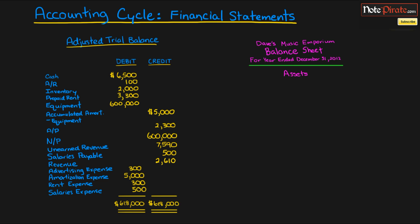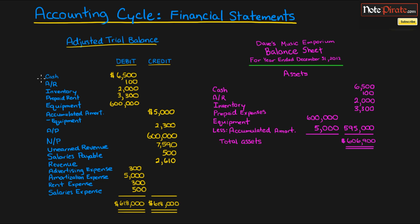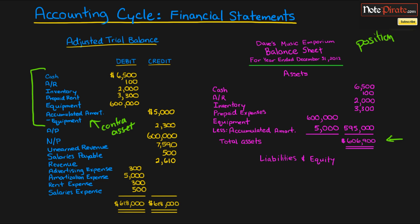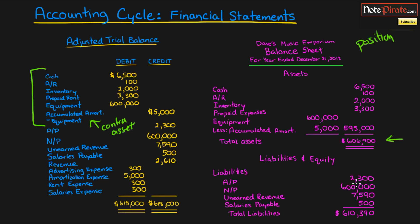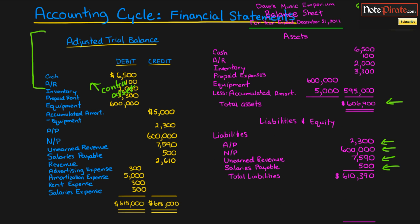We'll start with assets, the first part of the balance sheet, transferring all the different asset accounts from the left side of the adjusted trial balance — including contra assets, which still go in the asset section. Total assets come to 606,900. The balance sheet shows the financial position of the company: what assets we have, and our liabilities, which show any debts outstanding — such as accounts payable, notes payable, unearned revenue, and accrued salaries.